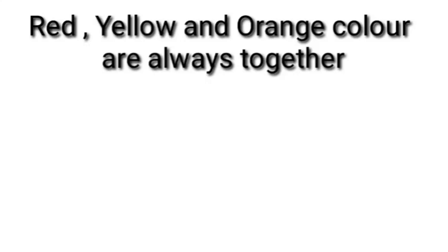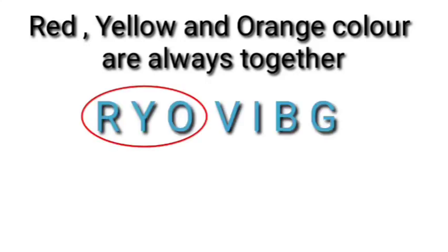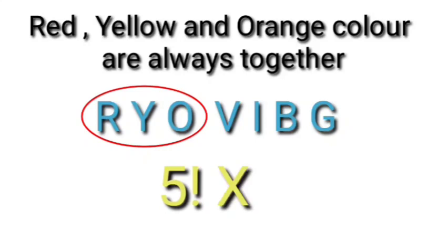Next part: red, yellow, and orange colors are always together. We combine red, yellow, and orange into one string with the remaining 4 colors, counting the string as 1 unit, giving us 5 total to arrange: 5 factorial. Inside the string we arrange the 3 colors, so we multiply by 3 factorial.